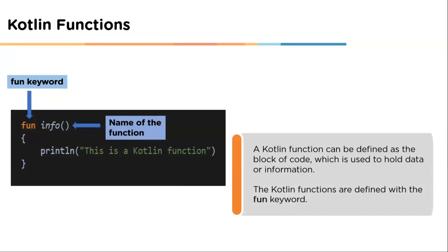Our first topic is Kotlin functions. Functions in Kotlin are very similar to functions in Java, with some minor differences. A Kotlin function can be defined as a block of code which is used to hold the data. This block of code has a name and is defined with the fun keyword. For example, 'fun' is the keyword and 'info' is the name of the function.